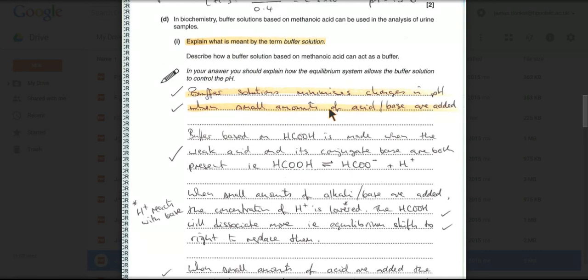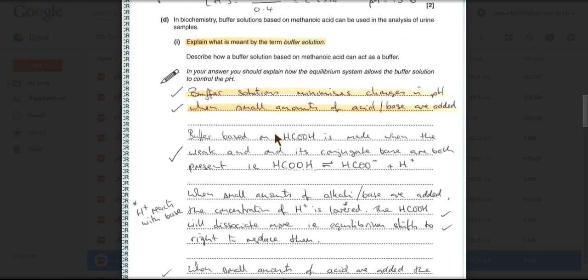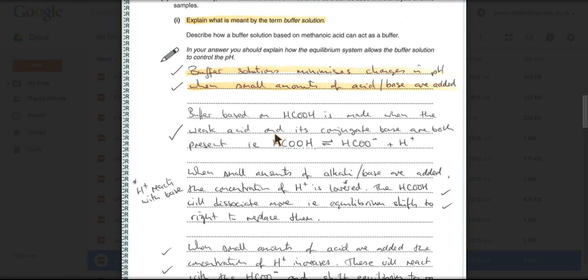So how do buffers work? Or what is a buffer? Buffer solutions, they minimize changes in pH or small changes in pH when small amounts of acid or base are added. So a buffer based on methanoic acid is made when the weak acid, so that's the HCOH, and its conjugate base, that's the HCOO minus ion, they're both present. So get an equation in because we're going to talk about that.